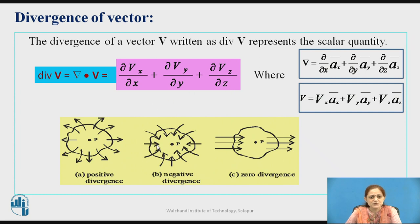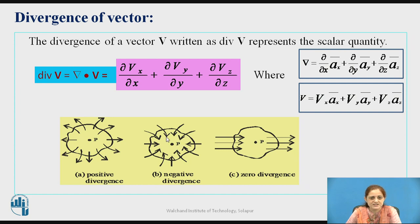This figure shows positive divergence, negative divergence, and zero divergence. In the first figure, point P is placed at the center and field lines are going outward, which is positive divergence. In the second figure, point P is at the center and field lines are incoming towards point P, so the divergence is negative. In the third figure, outgoing field lines are equal to incoming field lines, and therefore the divergence equals zero.